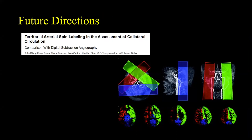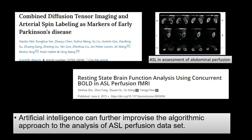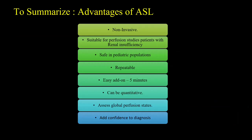Things to look forward to in the near future: ASL for assessment of collateral circulation — arterial territory-wise perfusion status of the brain; combination of DTI with ASL as a marker of early Parkinson's disease; use of ASL in functional MRI assessment; and ASL for abdominal imaging to assess abdominal perfusion. In conclusion, ASL is non-invasive, suitable where contrast is contraindicated, safe in the pediatric population, repeatable, an easy add-on to protocols, can be quantitative, can assess global perfusion states, and definitely adds confidence to diagnosis.